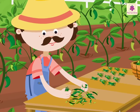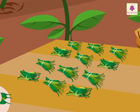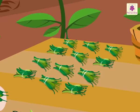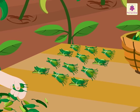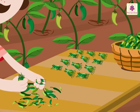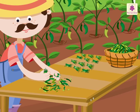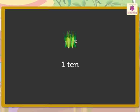Look, the farmer has made groups of ten chillies. Let's count by tens and learn some numbers and number names with the help of these groups. One ten chillies means ten chillies.